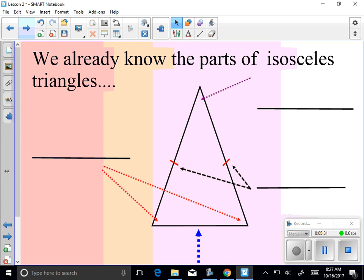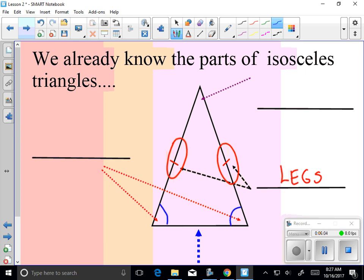All right. Let's talk parts of the isosceles triangle. What were these two side lengths called? They're equal in length, so we called them the legs. Is that what you said, Sydney? Okay. Those are the legs. What were these two angles called? Right here and right here. We call them the base angles. Base angles. Good.